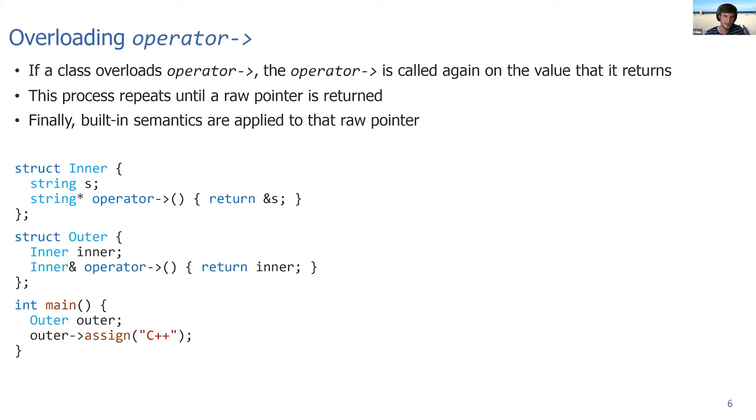In this example here, we have a struct Inner which contains a string and overloads operator arrow to return a string raw pointer. We have a struct Outer which contains an object of type Inner and also overloads the operator arrow to return a reference to the Inner. If in a main function you construct an object Outer and call outer->assign, then the compiler will translate it into first calling the operator arrow on the outer object, which gives us an inner reference. Then on that inner object, calling the operator arrow again to get a raw pointer and then apply the built-in semantics there.